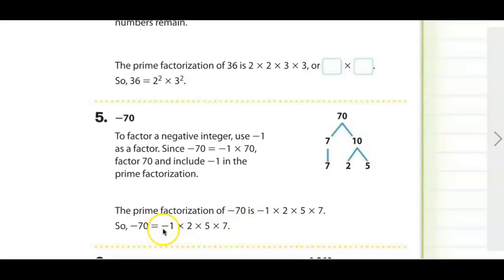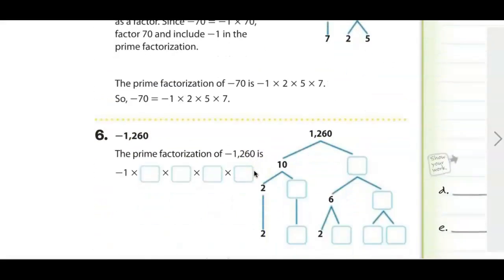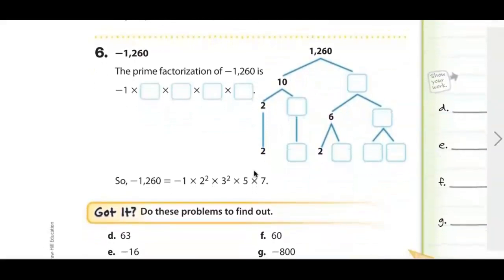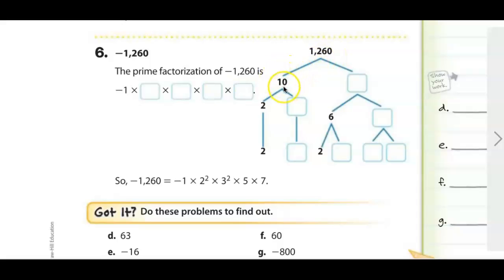One more example before guided practice — negative 1,260. Automatically we put negative 1 at the front. Since the number ends in 0, it's a multiple of 10. So 10 times 126 equals 1,260. Ten breaks into 2 times 5, both prime. For 126, we divide by 6: 126 ÷ 6 = 21.